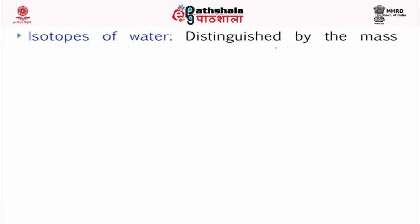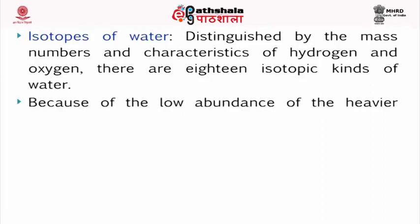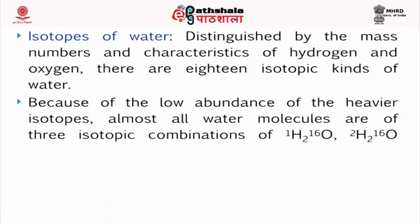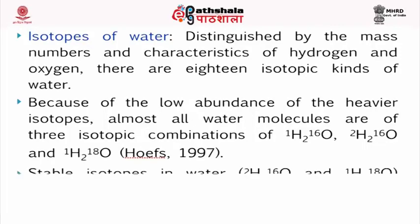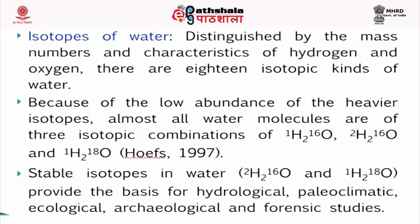Isotopes of water: Water is distinguished by the mass numbers and characteristics of hydrogen and oxygen, and there are 18 isotopic kinds of water. Because of the low abundance of the heavier isotopes, almost all water molecules are of 3 isotopic combinations: ¹H₂-¹⁶O, ²H₂-¹⁶O, and ¹H₂-¹⁸O. Stable isotopes in water, ²H₂-¹⁶O and ¹H₂-¹⁸O, provide the basis for hydrological, paleoclimatic, ecological, archaeological, and forensic studies.